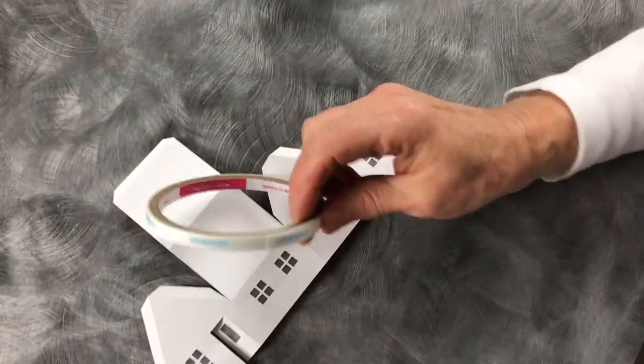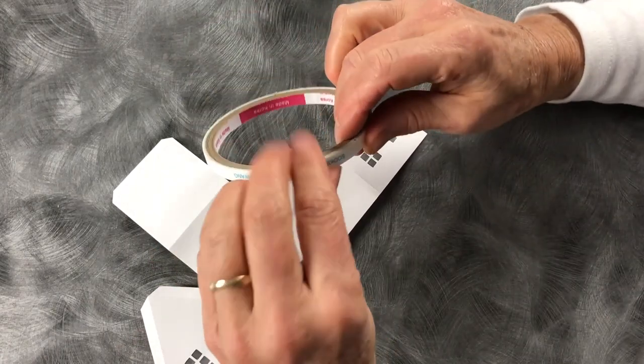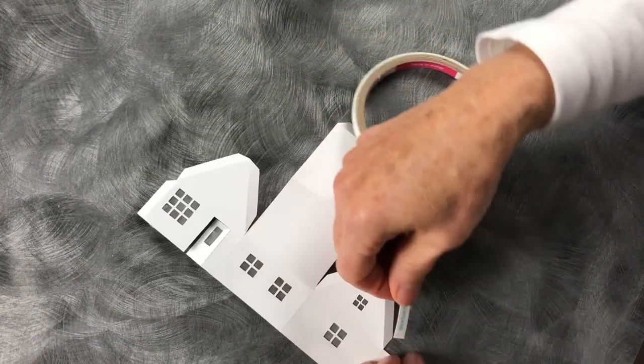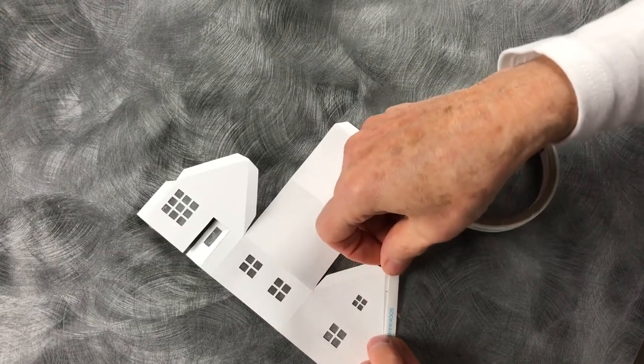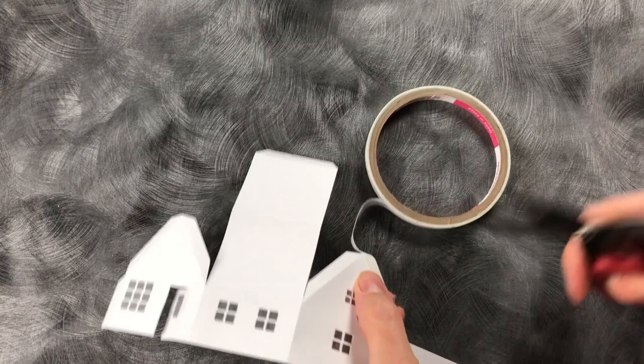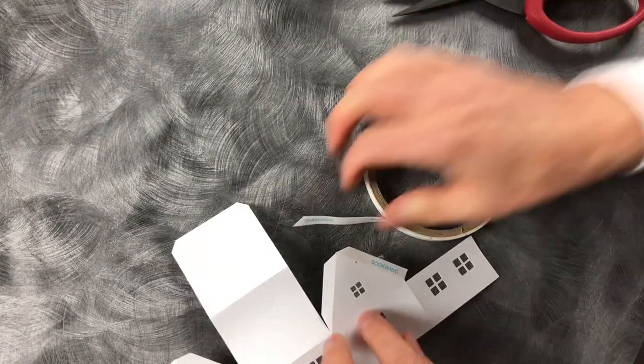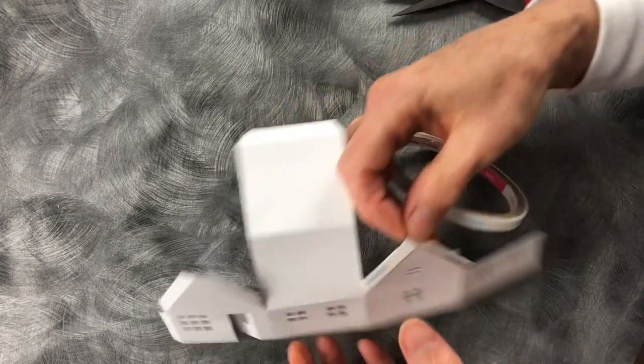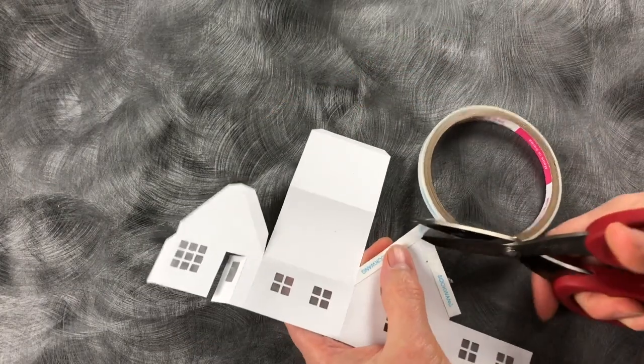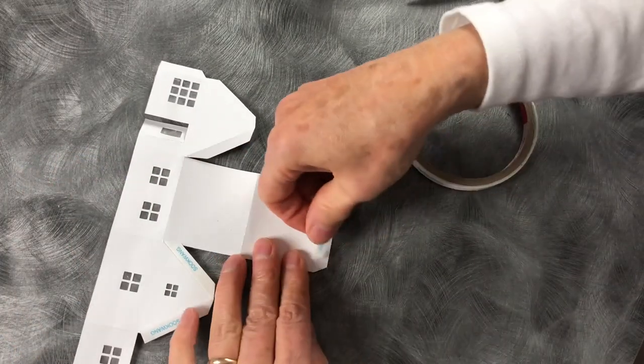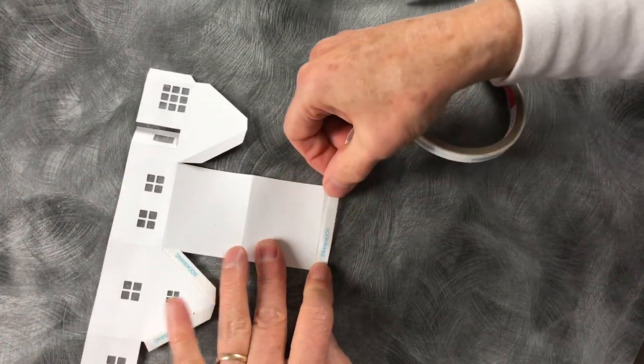Now, let's take score tape. I especially like score tape as my adhesive of choice on these buildings. It goes on easily, it lasts a long time, and it keeps my fingers clean. I also like it because I can apply all of the score tape while the building is flat and only remove the backing as I need to adhere the different pieces. It really works well for this type of project.